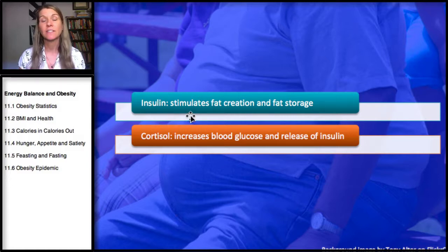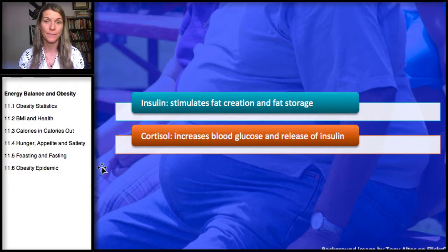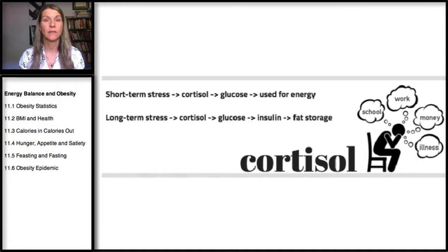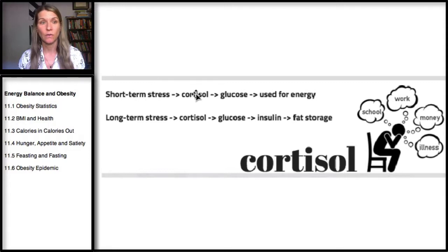Insulin stimulates fat creation and fat storage. Cortisol, our stress hormone, increases blood glucose and the release of insulin. Acute stress, or short-term stress in response to danger — which is part of our fight-or-flight response — will result in a cortisol release.